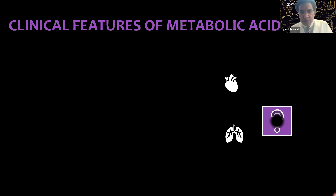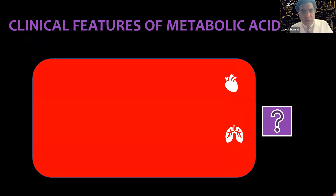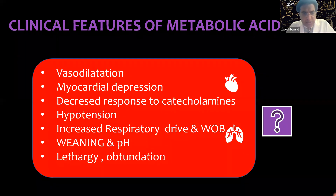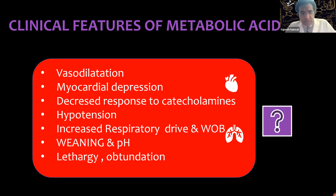The clinical features of metabolic acidosis at a pH of 7.1 to 7.15 are very significant: vasodilation, myocardial depression, decreased response to catecholamines, and hypotension. These patients also have increased respiratory drive because they are trying to compensate by washing out CO2, increasing the work of breathing. This is very important in weaning: if you try to wean and extubate a patient who is in metabolic acidosis, you are adding to the work of breathing. Ideally the pH should be near normal when you try to extubate.